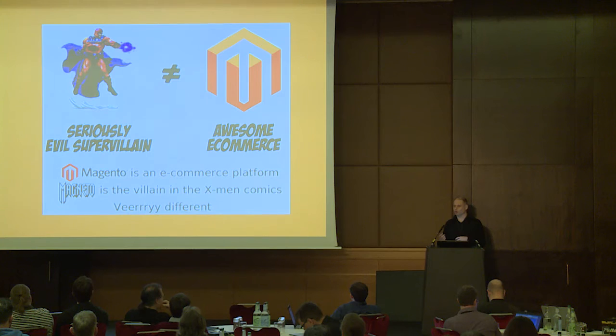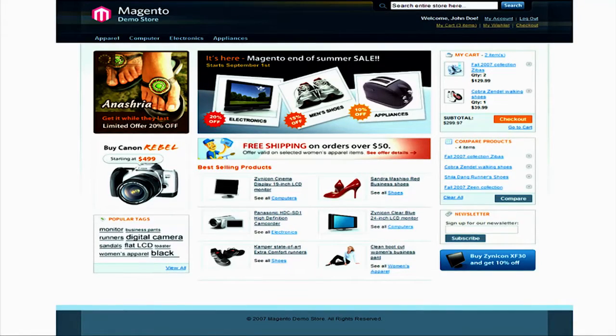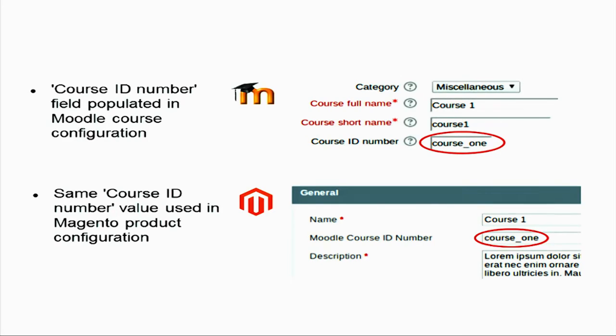Magento is an awesome e-commerce system — and don't mix that with Magneto, the evil supervillain from the Marvel X-Men comics. Basically, it gives you the whole shopping front end, and more importantly behind the scenes, not just the web page with the shopping stuff, but the workflows you might want to do. So maybe you want to sell products and then sell courses on top of that. They've got a much better looking bootstrap theme now. We've published a bit of code as well — you install a plugin into the Moodle side, a plugin into the Magento side, link the courses together, and it's very simple and straightforward. Magento then takes care of the whole workflow, taxes, invoices, and so on.